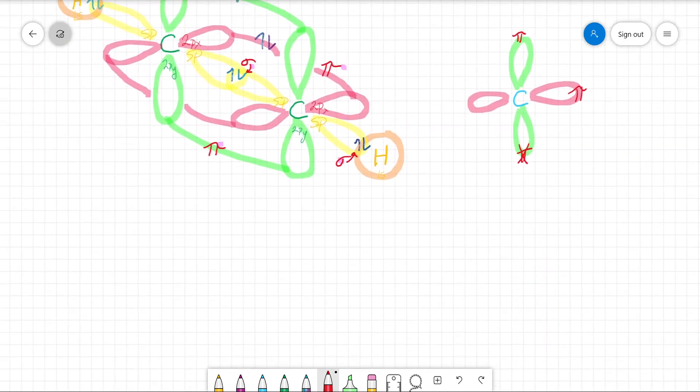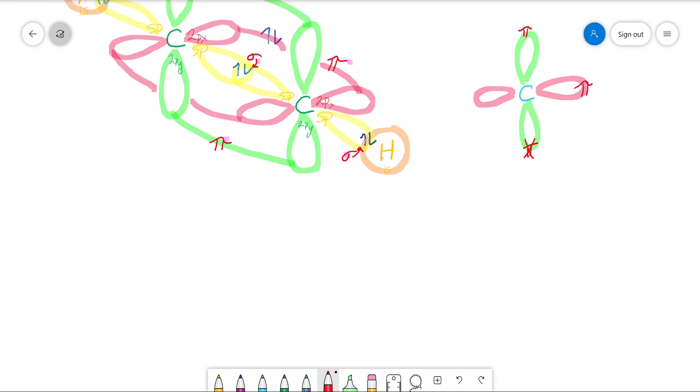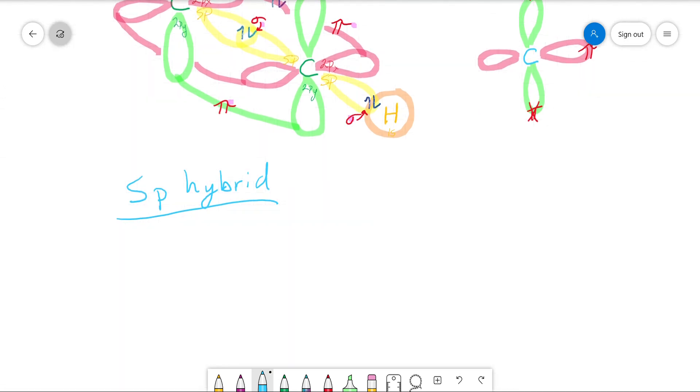But if we have an sp hybrid, let's just talk about that for a second. SP hybrid. We're going to have two things, and we're going to have the basic shape, electron geometry, whatever you want to call it, is going to be linear, and then of course that means a bond angle of 180 degrees. All right, so next I'll sum up two more hybrids, and I'll give you an example problem.